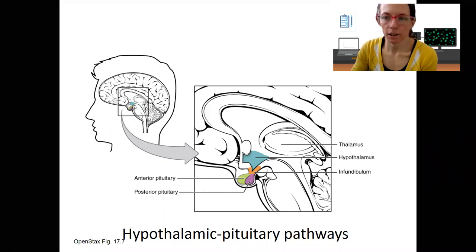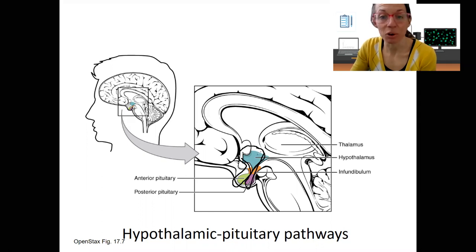Let's start with the hypothalamic pituitary pathways. These pathways go from the hypothalamus to the anterior pituitary, and there's separate pathways that have different anatomy that go to the posterior pituitary. Then there's multiple hormones involved in each pathway. So pretty complex and pretty cool.